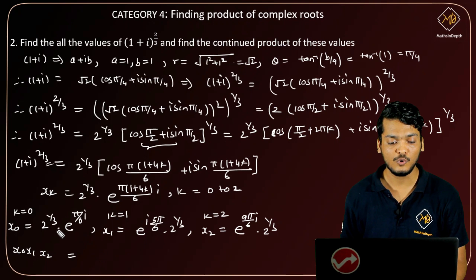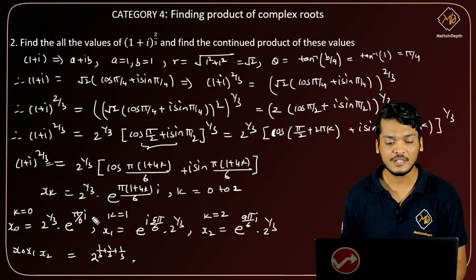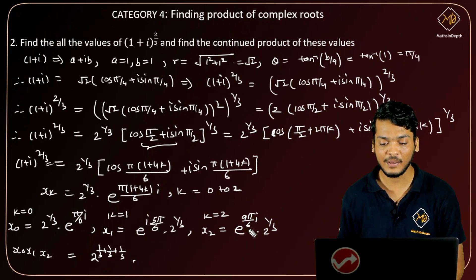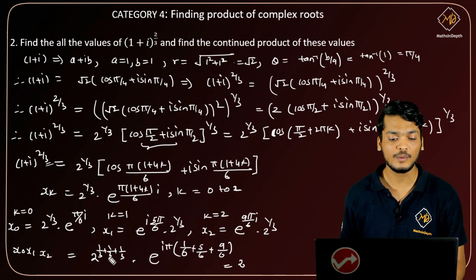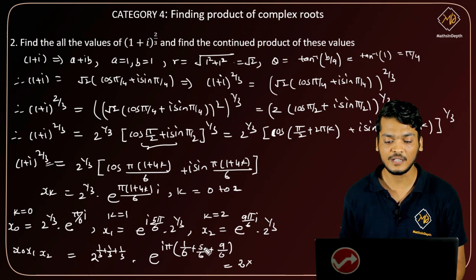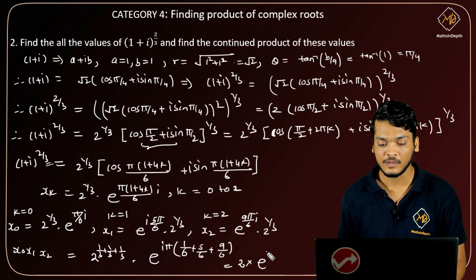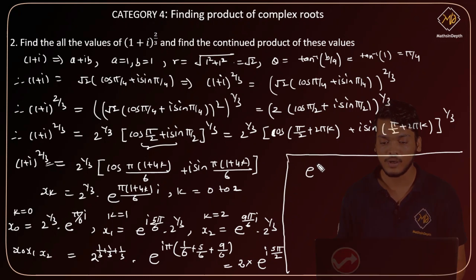The continued product x₀·x₁·x₂ equals 2^(1/3) · 2^(1/3) · 2^(1/3), which is 2^(1/3 + 1/3 + 1/3) = 2¹ = 2, multiplied by e^(i·(π/6 + 5π/6 + 9π/6)). The exponent sum is (1+5+9)/6 = 15/6 = 5π/2. So the product equals 2 · e^(i·5π/2).